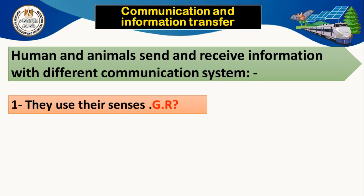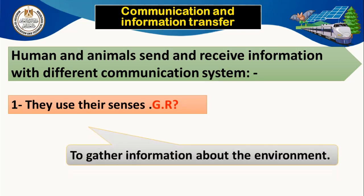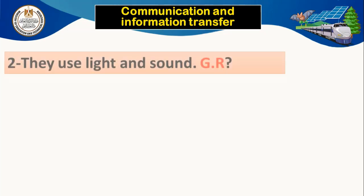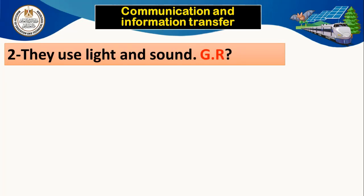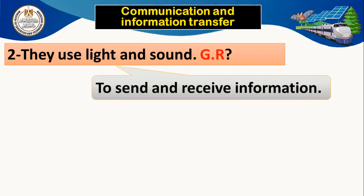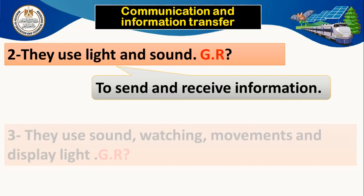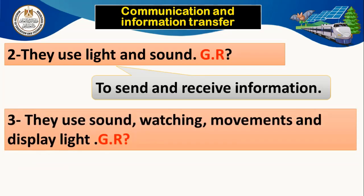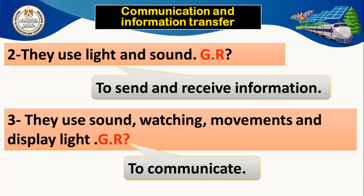First, they use their senses to gather information about the environment. Number 2, they use light and sound to send and receive information. Number 3, they use sound, watching, movements, and display light to communicate.